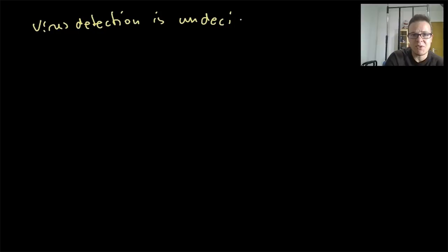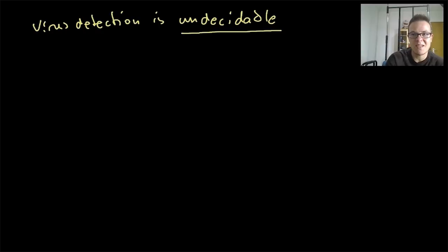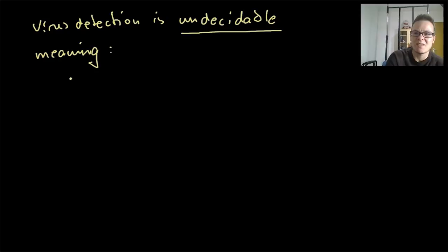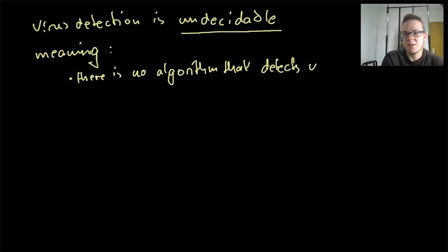This says that virus detection is an undecidable problem. In the mathematical sense, an undecidable problem just means that there is no algorithm that will perfectly decide about this question. This is about being perfect. This does not mean that we can never decide whether a file is malicious or not — there's just no perfect solution, but there can be a solution that is just good enough.